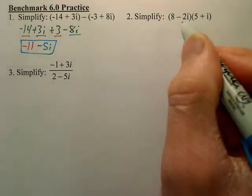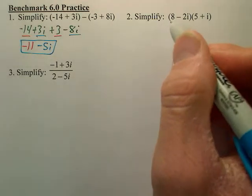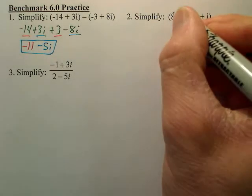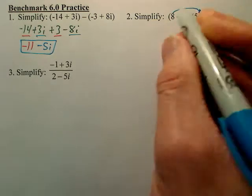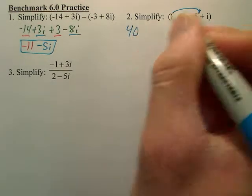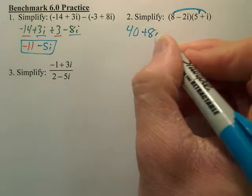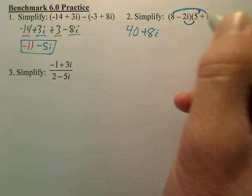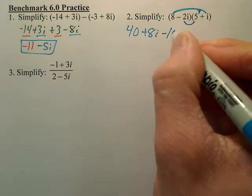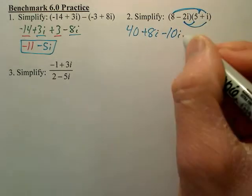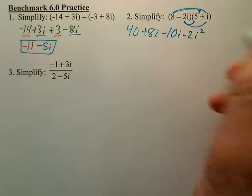When I want to multiply these two imaginaries, you use FOIL. So this times this is equal to 40, that times that is positive 8i, this times this is negative 10i, and that becomes negative 2i squared.